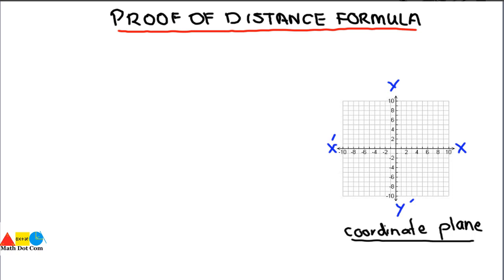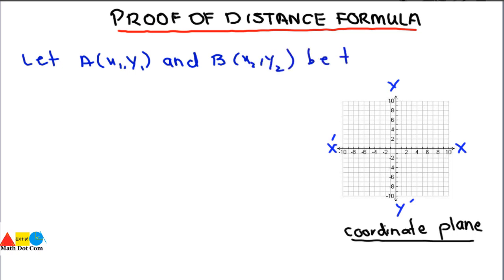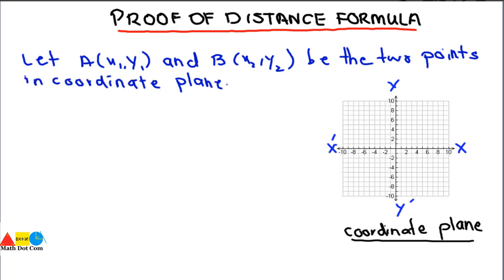Let's start with the assumptions. Let A(x1, y1) and B(x2, y2) be the two points in the coordinate plane. We have to find the distance between these two points. Let's plot these points in the coordinate plane — we'll take one point here and one point here, so this will be A(x1, y1) and B(x2, y2).